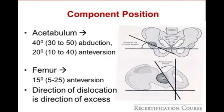Moving on to component positioning in total hip arthroplasty. On the acetabular side, we speak of the safe zone — approximately 40 degrees of abduction (range 30 to 50 degrees) and approximately 20 degrees of anteversion (range 10 to 40 degrees). On the femoral side, we shoot for 15 degrees of anteversion, with a range of 5 to 25 degrees generally accepted for the safe zone.